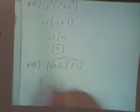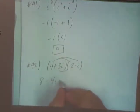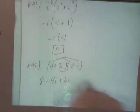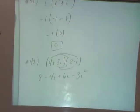So four times two is eight, and then minus four I, and then plus six I, and then minus three I squared. Don't forget that squared.